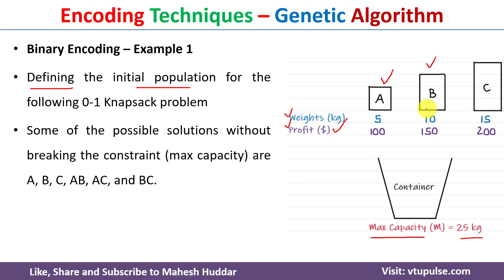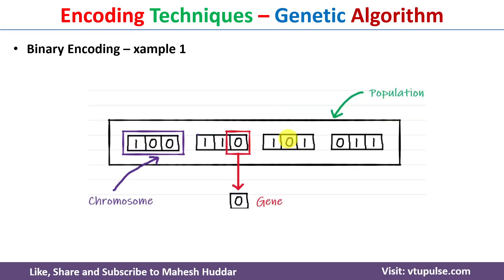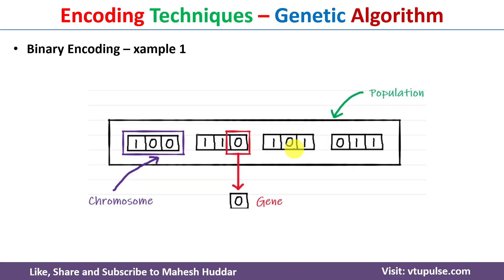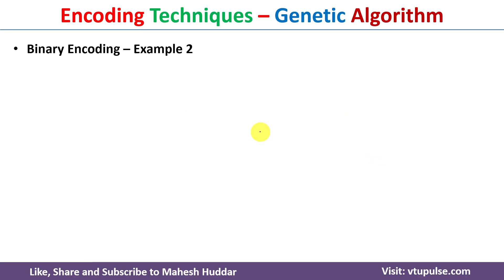So these are all the candidate solutions. To encode them as chromosomes, since there are three items, we consider one gene for each item. If a particular item is selected we put 1 for that gene; if it is not selected we put 0. For example, the first chromosome '1 0 0' means item A is selected, B and C are not. For the second chromosome, A and B are selected, C is not, and so on.